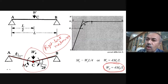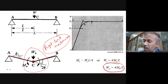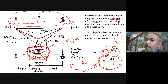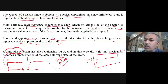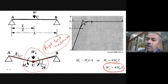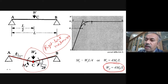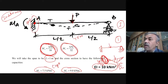As you keep on increasing the load, plasticity slowly spreads, but we assume it collapses like this. Once a hinge forms here, it is just like a rigid link — a mechanism, like two pieces. That is how we model it.